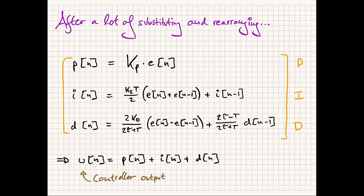After substituting and rearranging — recalling that multiplying by Z is the same as a time shift by one sample — we can arrive at the final difference equation, broken into three terms just like the PID controller itself. The proportional term is unchanged: we multiply the error e[n] by the constant kp. The integral term shows that the current value is a summation of the previous two error terms and is also dependent on the previous integral term. The derivative term looks at the difference of the error across samples. We sum the outputs of the three paths to get the final controller output u[n].